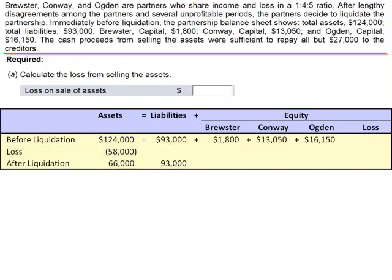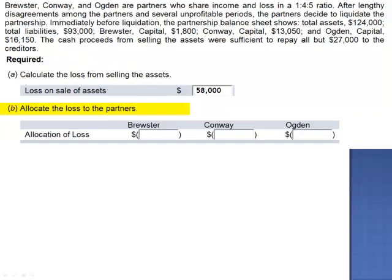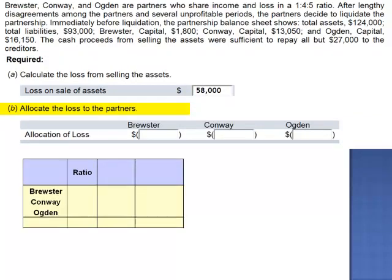The loss account is part of equity. Immediately after liquidation, we still have a $1,800 balance in Brewster's Capital account, $13,050 in Conway's, and $16,150 in Ogden. But we also have a debit balance sitting in the loss account. This loss needs to be allocated. To allocate the loss to the partners, we need to use the ratio. They shared income and loss in the ratio of 1 to 4 to 5, a total of 10 parts.